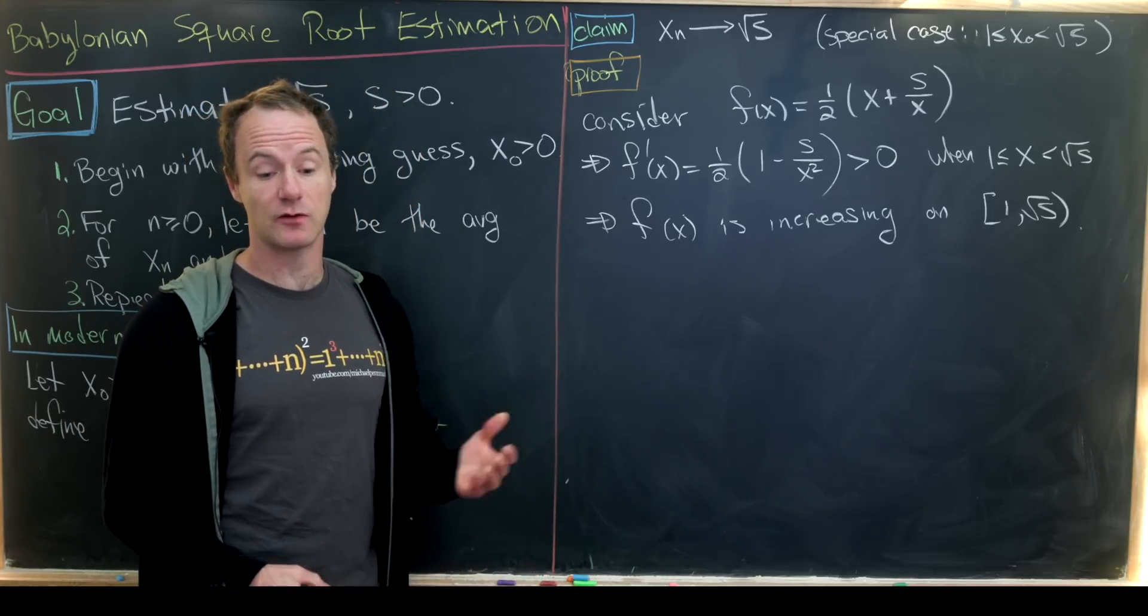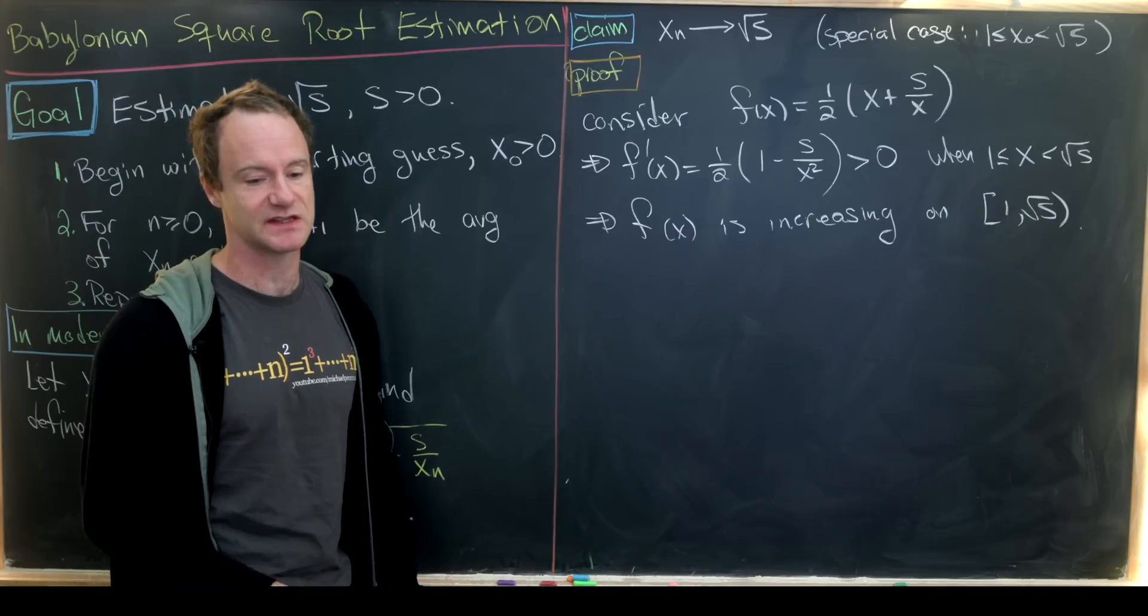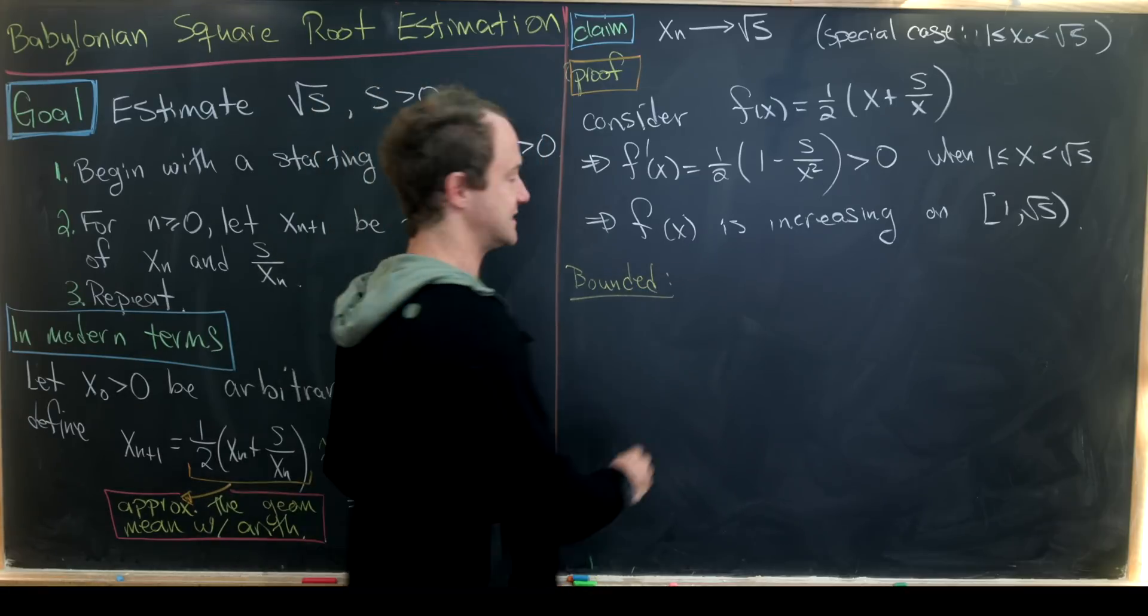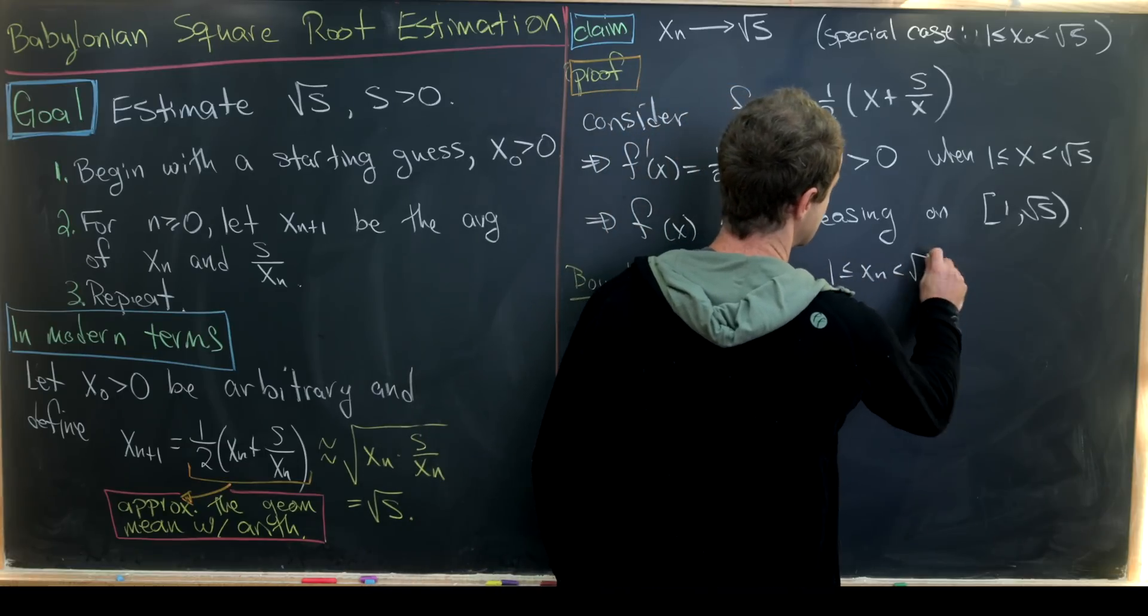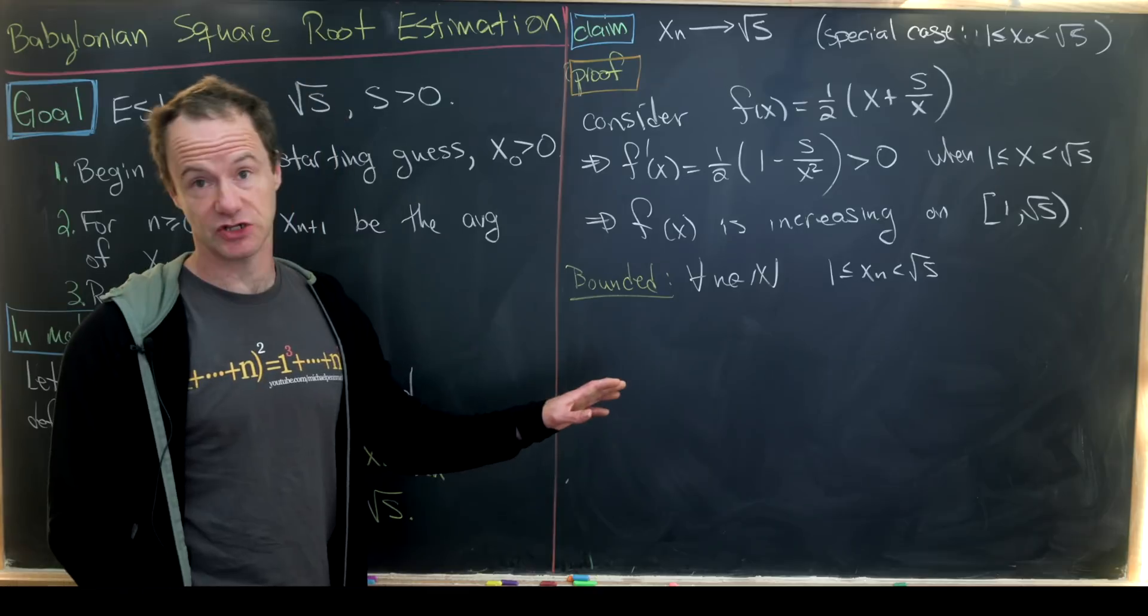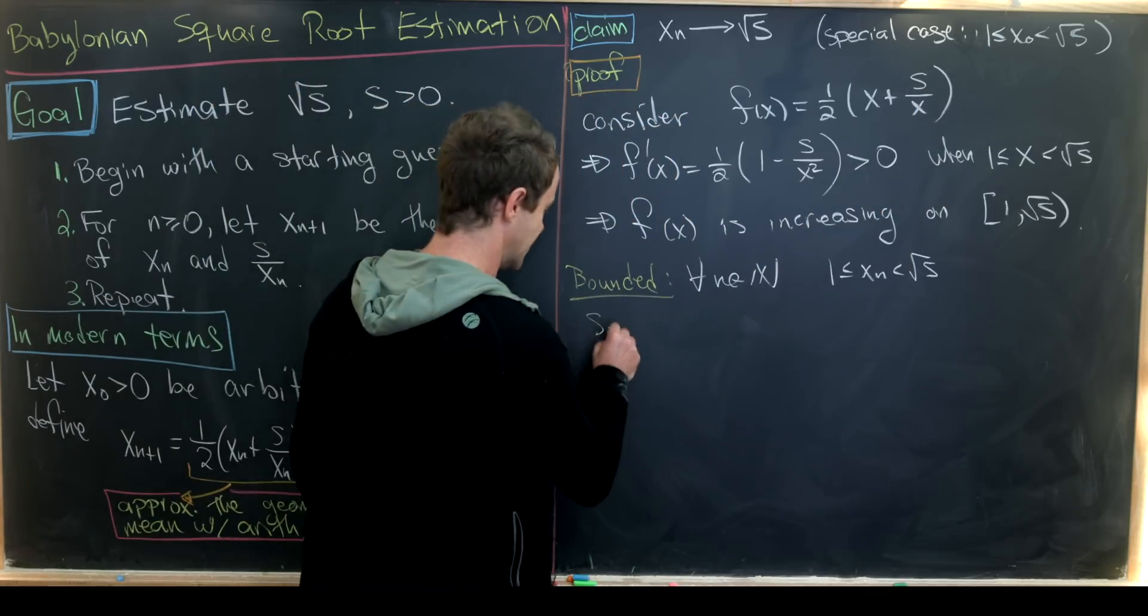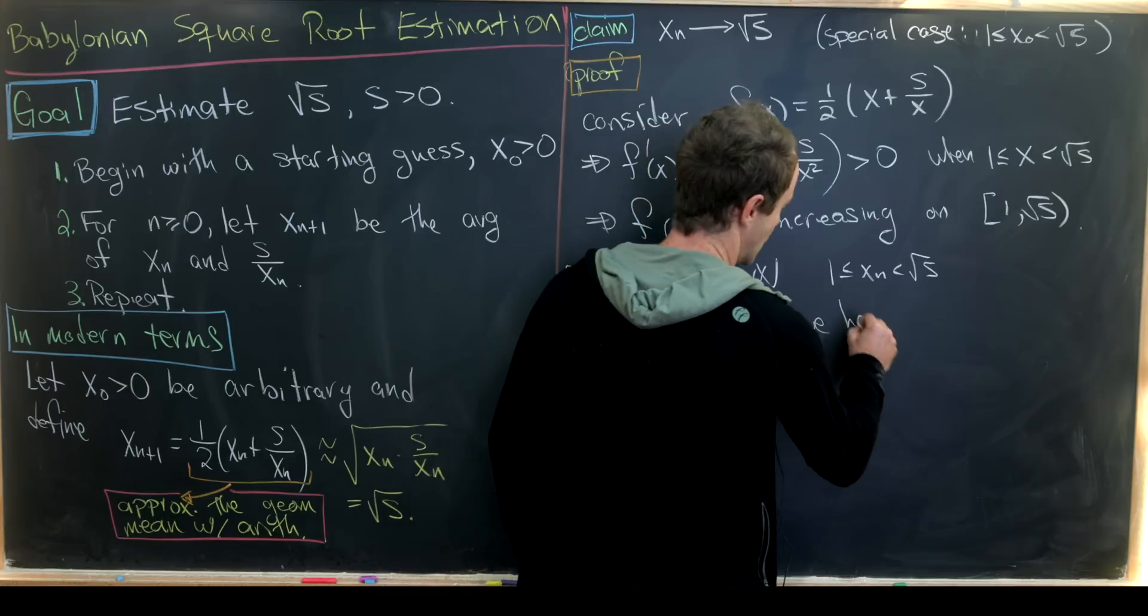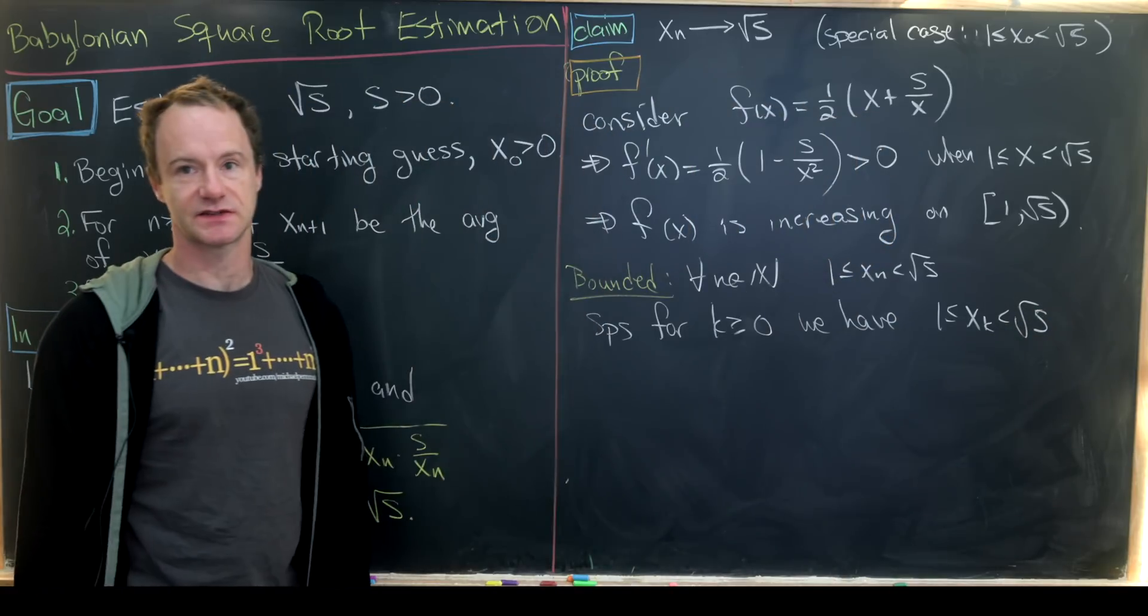Now that we've got this taken care of, we will show that our sequence is bounded and monotonic. And that means by the monotonic sequence theorem that this thing converges. So let's first show that it's bounded. And what we'll indeed show is that for all natural numbers n, we have xₙ is between 1 and the square root of s. And we can do that with induction. Our base case is already done because it's built into our setup right here. So let's make an induction hypothesis. Let's suppose for k ≥ 0, we have xₖ is between 1 and the square root of s.